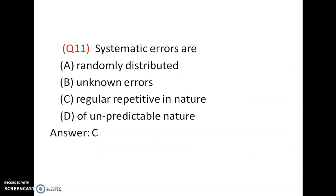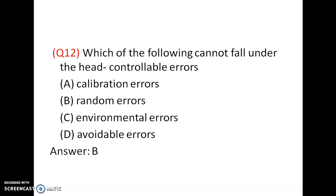Systematic errors are regular and repetitive in nature — they are not randomly distributed, not unknown, not unpredictable. Random errors are randomly distributed, unknown, and unpredictable in nature. So the answer is C. Regarding controllable errors: random errors cannot fall under controllable errors. Calibration errors and environmental errors can be controllable. Random errors are non-controllable errors, so the answer is B.